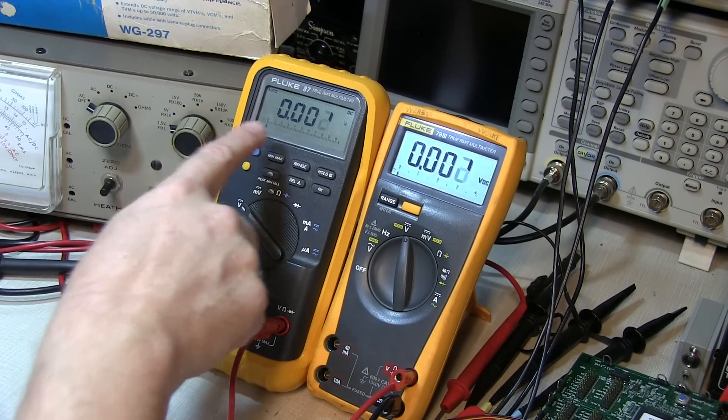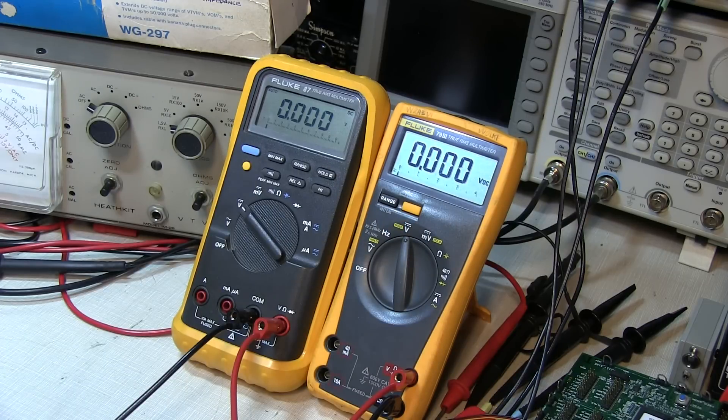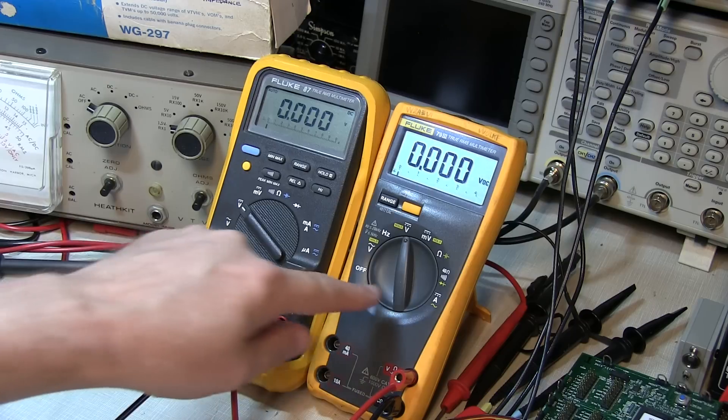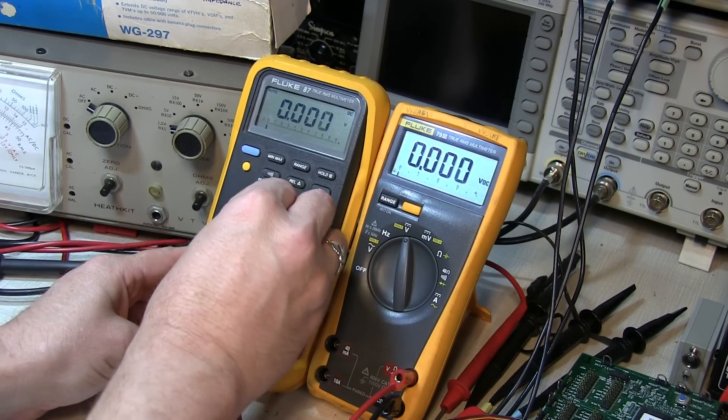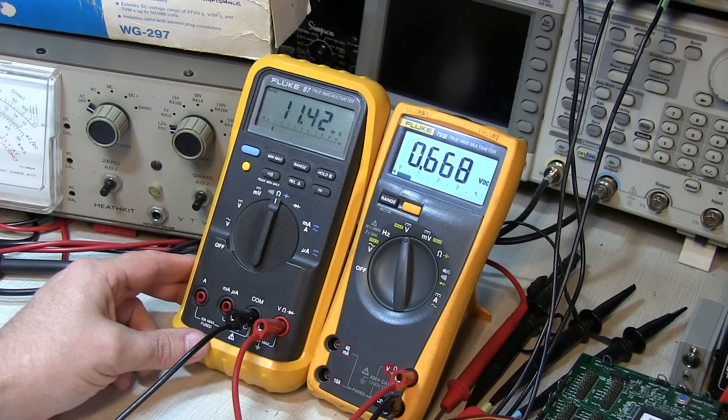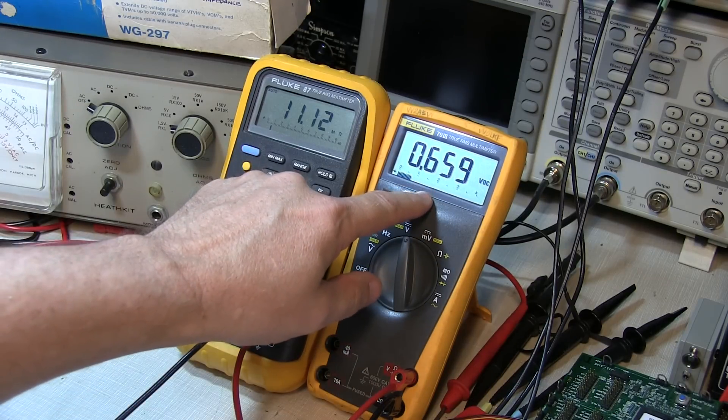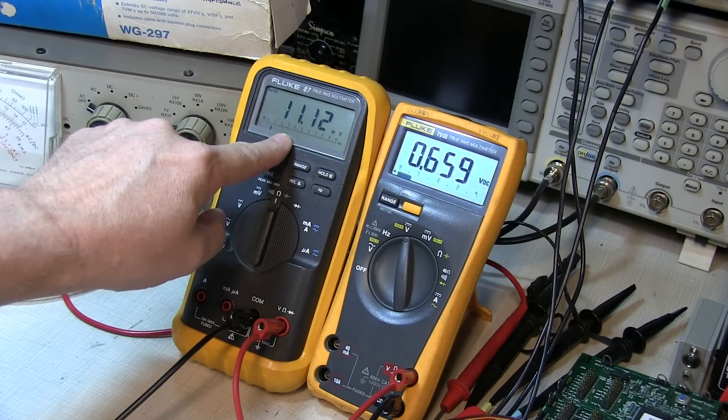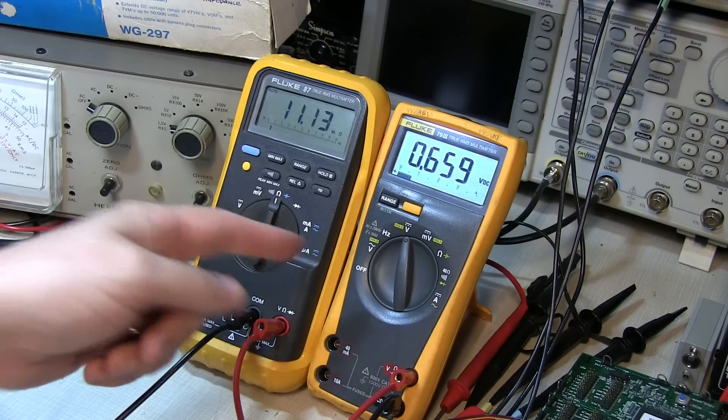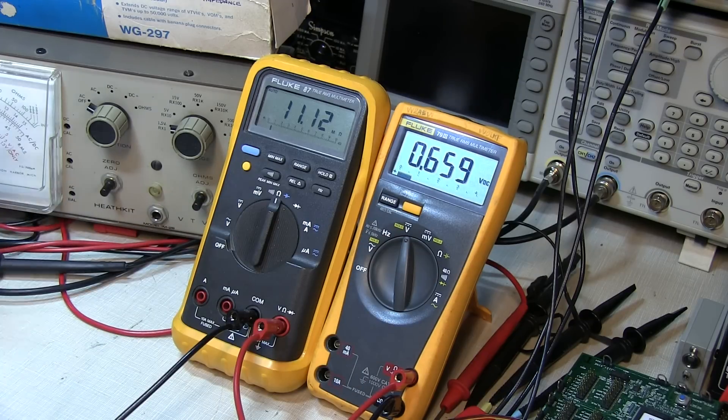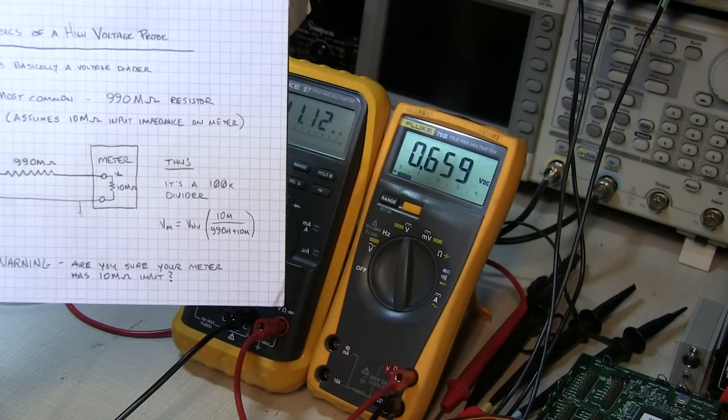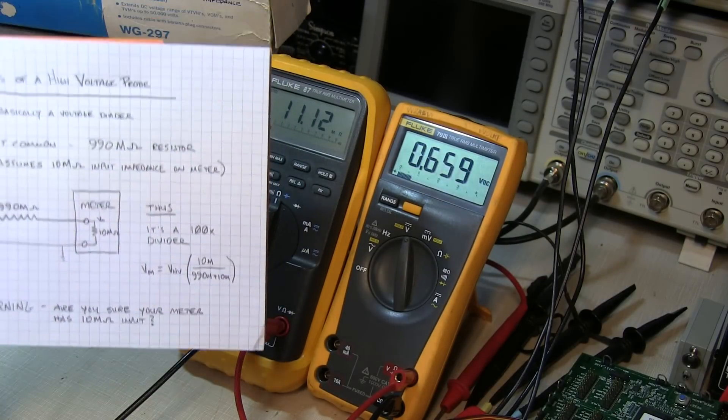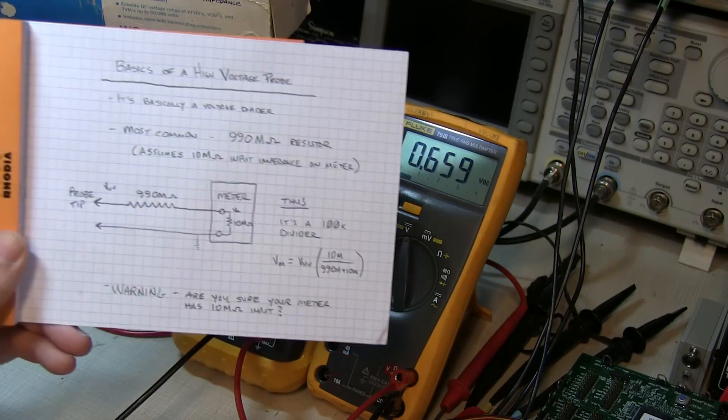So I've got two meters here, a Fluke 87 and a Fluke 79 Series 3. I've got them hooked directly into each other, so we can measure the input impedance of one meter using the other. If I set the 87 to read resistance, that's showing that the Fluke 79 is presenting an 11.1 megaohm resistance when it's on this scale. So that's not the 10 megaohms that we were assuming, so that voltage divider won't exactly be 100x. It would actually be a little bit larger, so you might measure larger voltages than you would have expected.